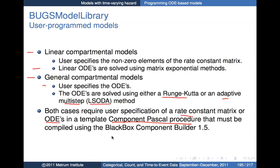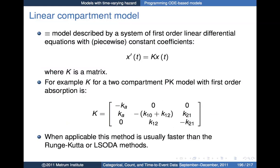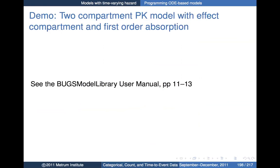We do the compilation using the Black Box Component Builder, which is the compiler and programming environment used to build WinBugs in the first place, so it can create components compatible with WinBugs. With Bugs Model Library, you get templates so you don't have to program everything from scratch — there's a core template for each case, and the user adds the key equations for the particular model they're building. The user manual for Bugs Model Library has examples in the relevant pages.